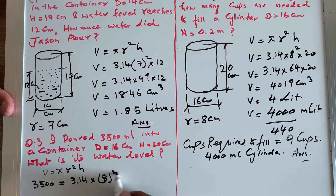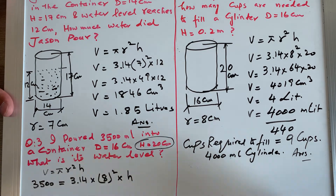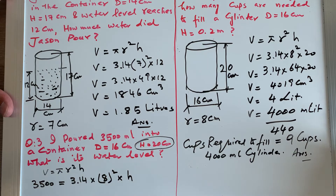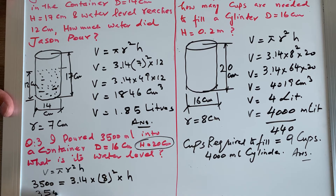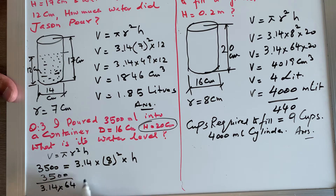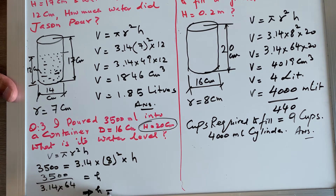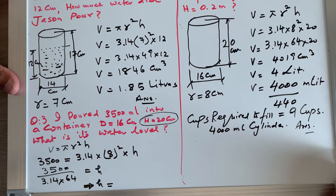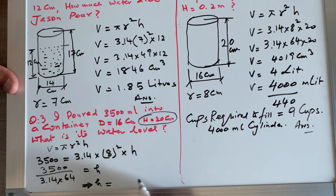The given height of 20 centimeters is the full capacity of the cylinder, but we are only concerned with when 3500 milliliters is poured. So we solve for h: h = 3500 ÷ (3.14 × 64). Solving this gives h ≈ 17.4 centimeters. So the water level in the cylinder when 3500 milliliters is poured is 17.4 centimeters.